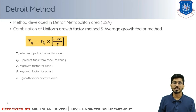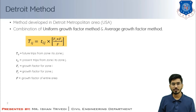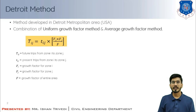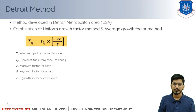The growth factor of zone I (Fi) multiplied by the growth factor of zone J (Fj) is divided by the average growth factor of the entire matrix or study area, denoted as capital F. Capital Tij denotes the futuristic trips from zone I to zone J. Small tij denotes the present trips from zone I (origin) to zone J (destination), or in the form of trip production to trip attraction. Capital Fi is the growth factor of zone I, Fj is the growth factor of zone J, and capital F is the growth factor of the entire area.